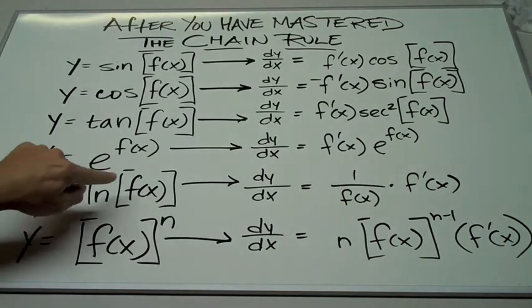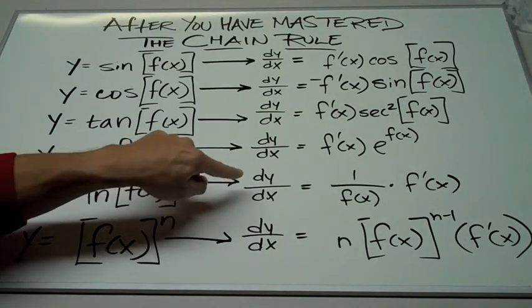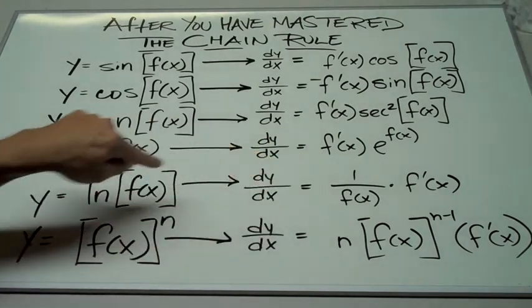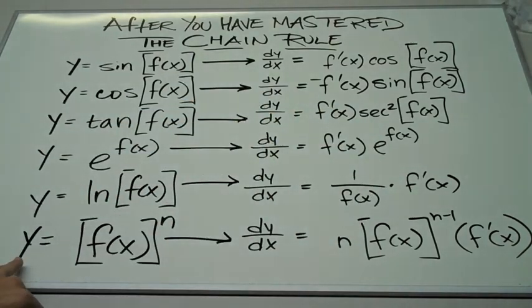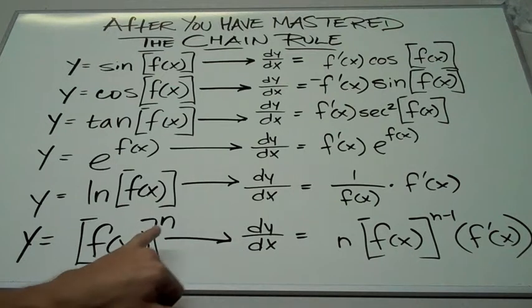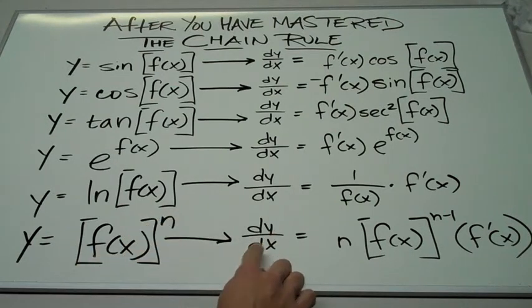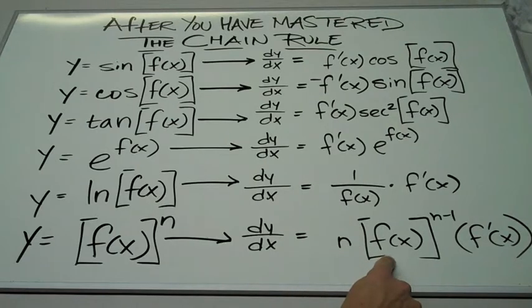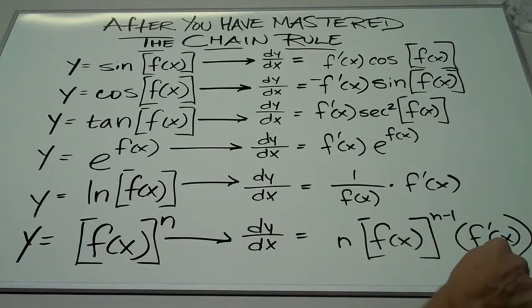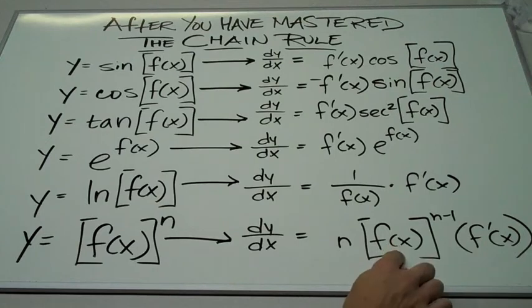If y is equal to the natural log of some function f of x, then dy dx is 1 over f of x times the derivative of that function. And last but not least, if y is equal to some function f of x to the n power, then the derivative is equal to, bring that out in front, n times f of x to the n minus 1 times the derivative of whatever that function was.